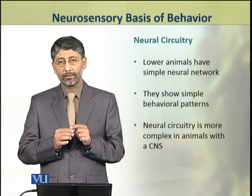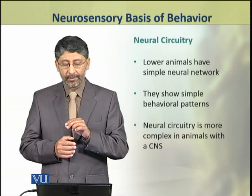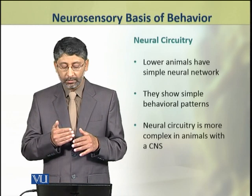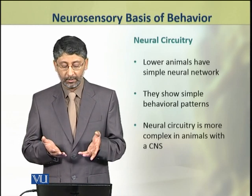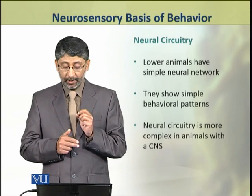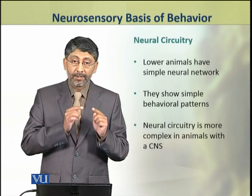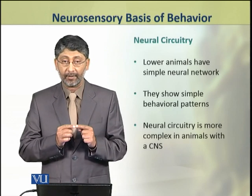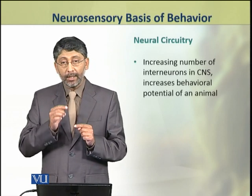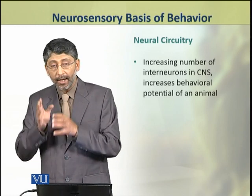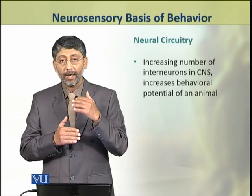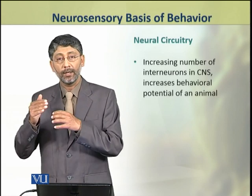Lower animals have simple neural networks, so they show simple behavioral patterns. However, the neural circuitry in more complex animals with a central nervous system is highly complex. In higher animals, the number of interneurons in the central nervous system has increased, which has increased the complexity of behavioral patterns.